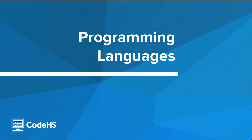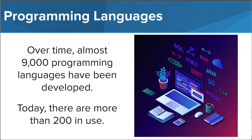In this video we're going to learn about a few key differences in programming languages and explore more about Python. Since the first computer program was developed by Ada Lovelace in 1843, there have been close to 9,000 different programming languages developed. Some of the languages built 100 years ago probably aren't too helpful when programming the computers we currently use, and for this reason only about 200 programming languages are in use around the world.